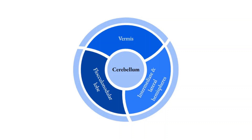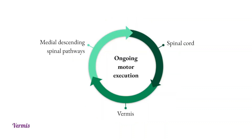The topographic arrangement suggests that the vermis controls the proximal axial musculature of the limbs, the intermediate hemisphere controls distal musculature, and the lateral hemisphere is involved in motor planning. The cerebellar vermis modulates posture, and its input comes from the spinal cord.